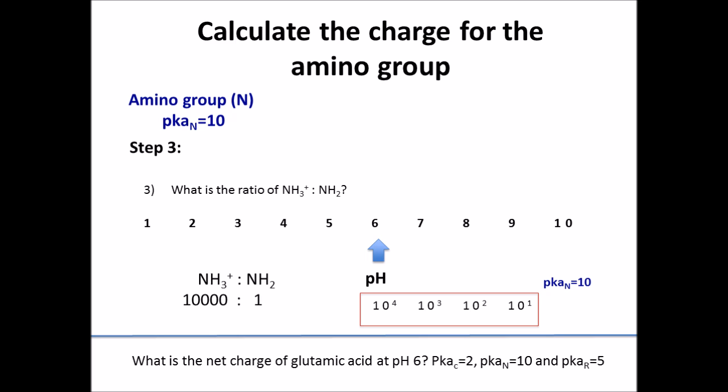That brings me to the third step: what is the ratio of protonated to deprotonated molecules? Remember the pH scale is logarithmic, so moving up or down one unit is 10 times more or less protons in solution. So if the amino group has a pKa of 10 and is in a solution of pH 6, then you are moving 4 units, which equals 10 to the power of 4, meaning 10,000 molecules will be protonated for every one molecule that is deprotonated.